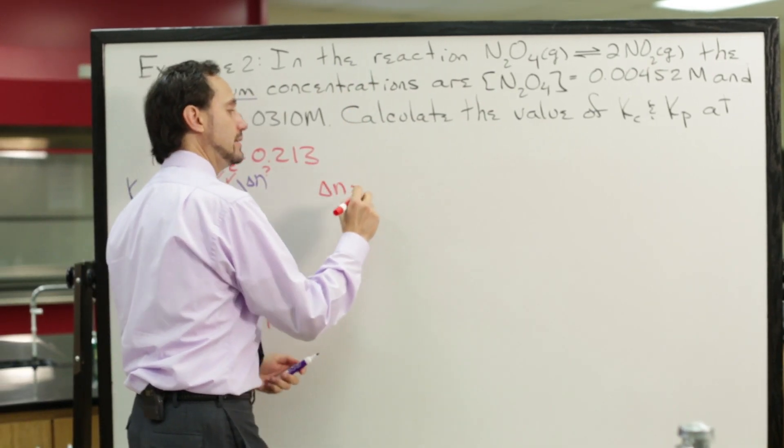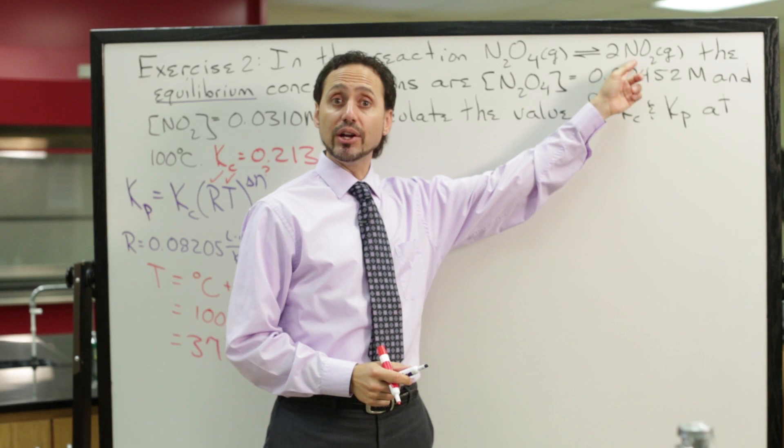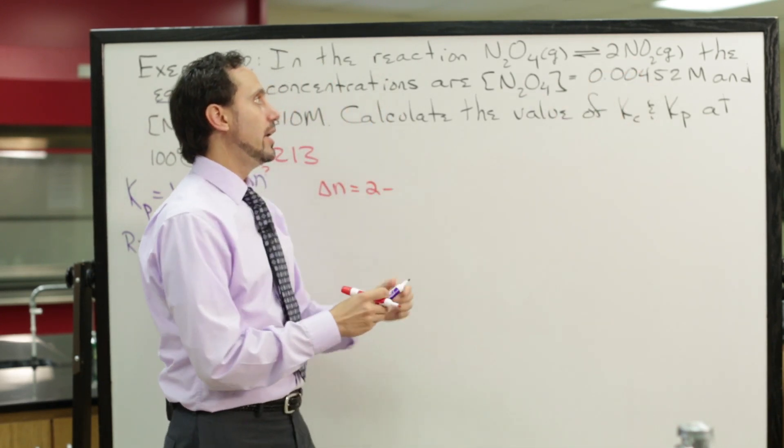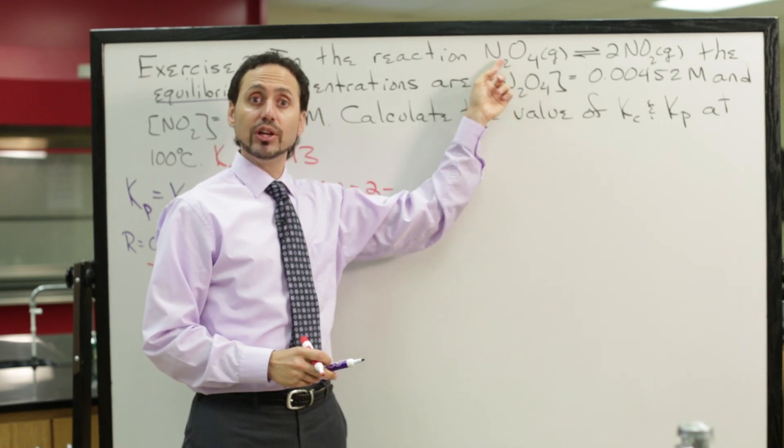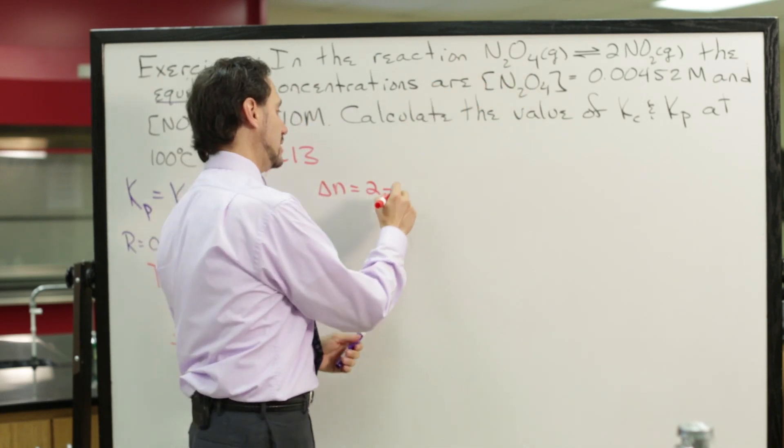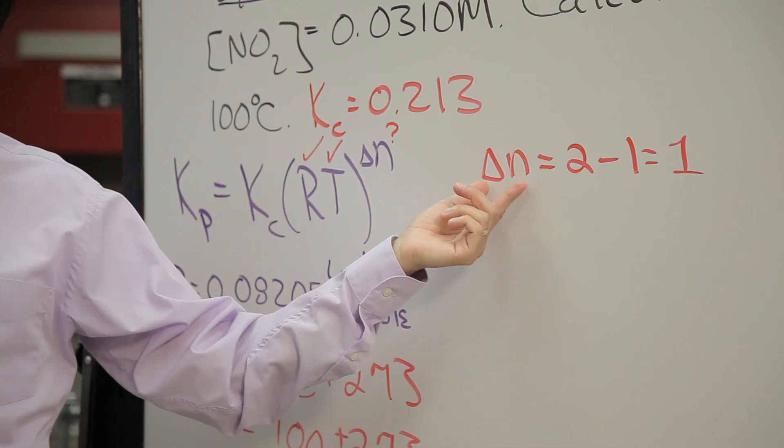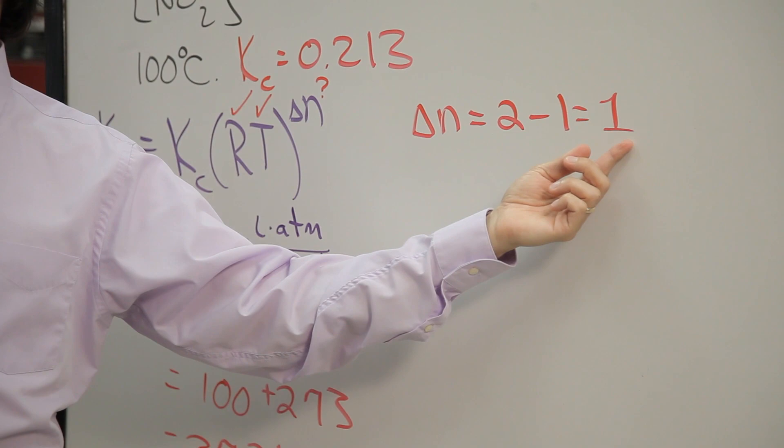So delta n is the product moles, we have two moles of the product minus the reactant moles, and we have just one mole of the reactant. So delta n for this equilibrium is going to be 1.